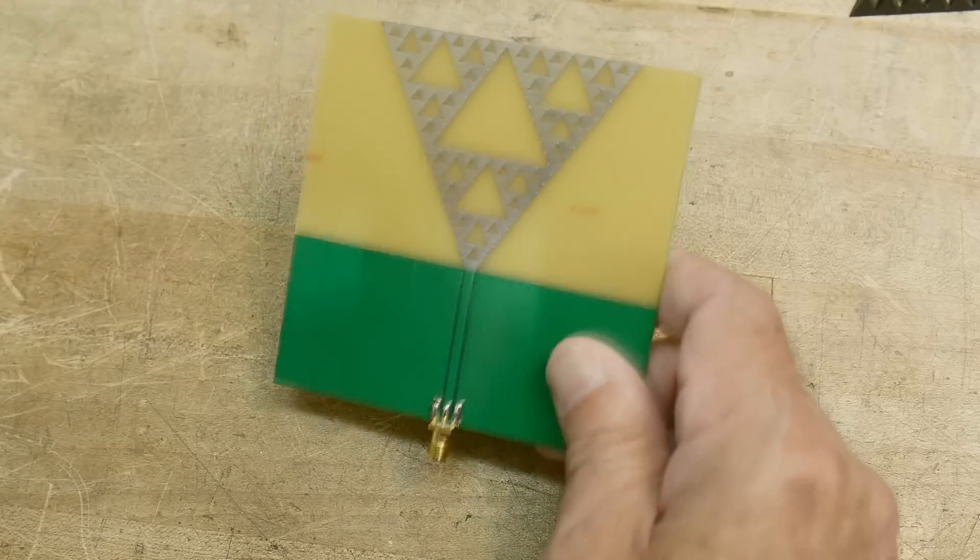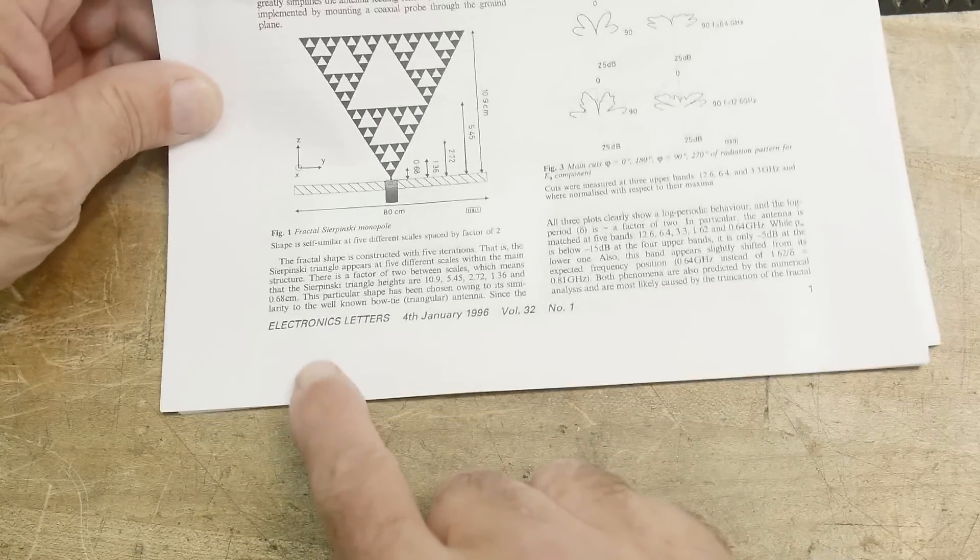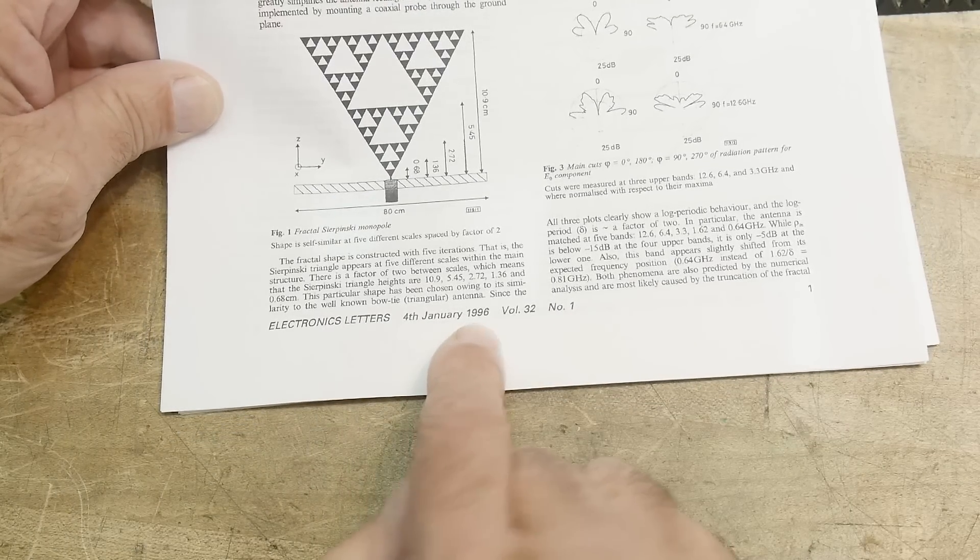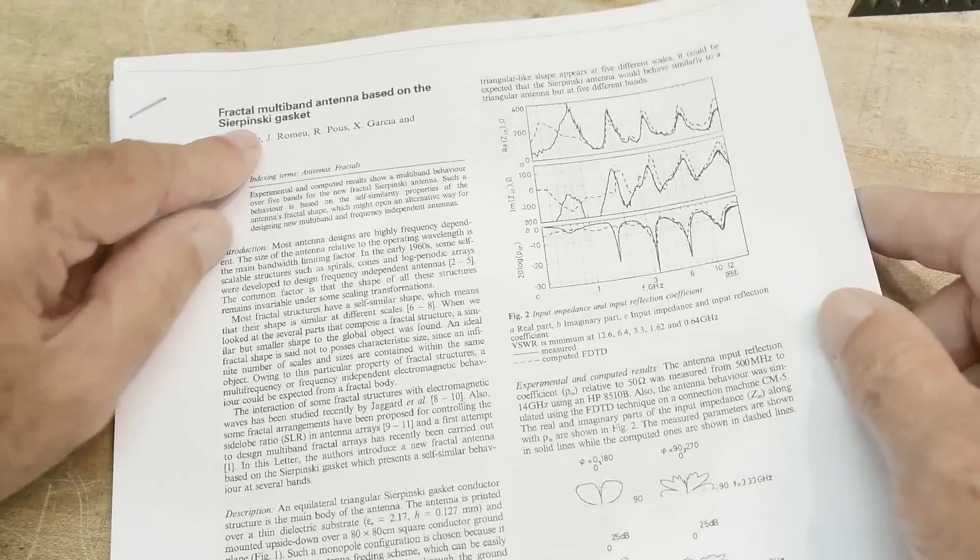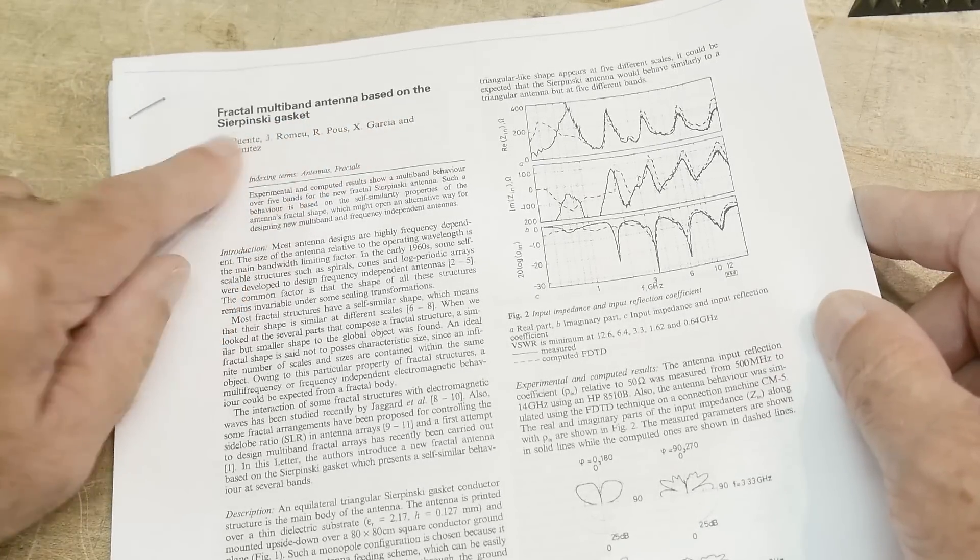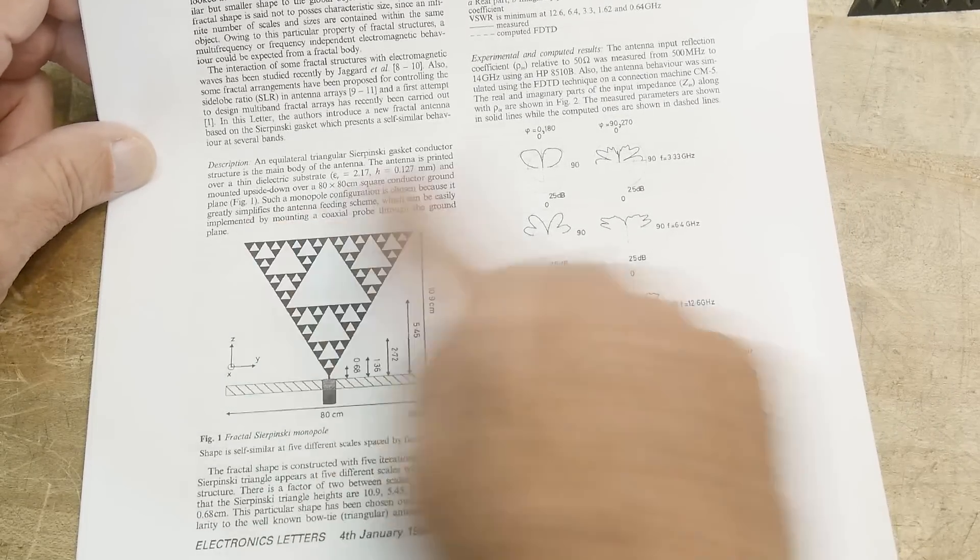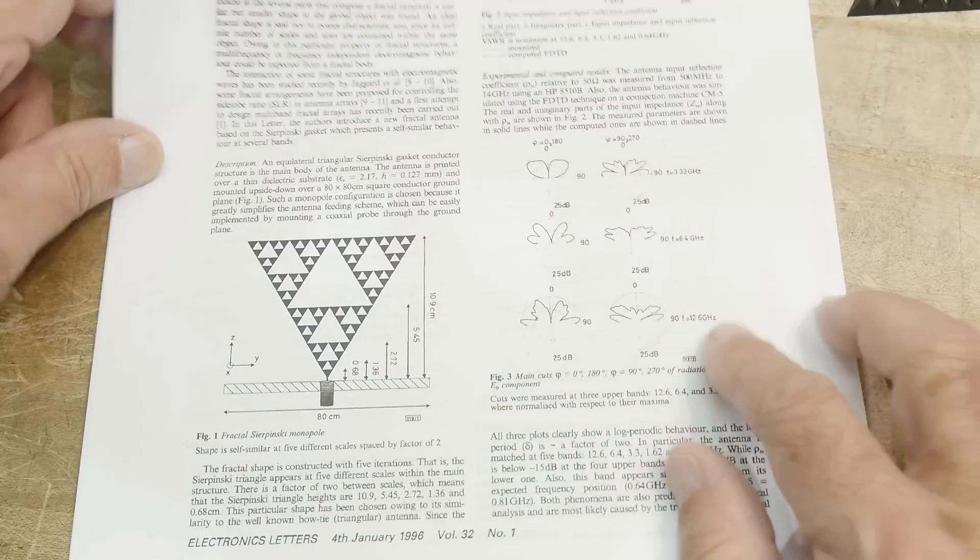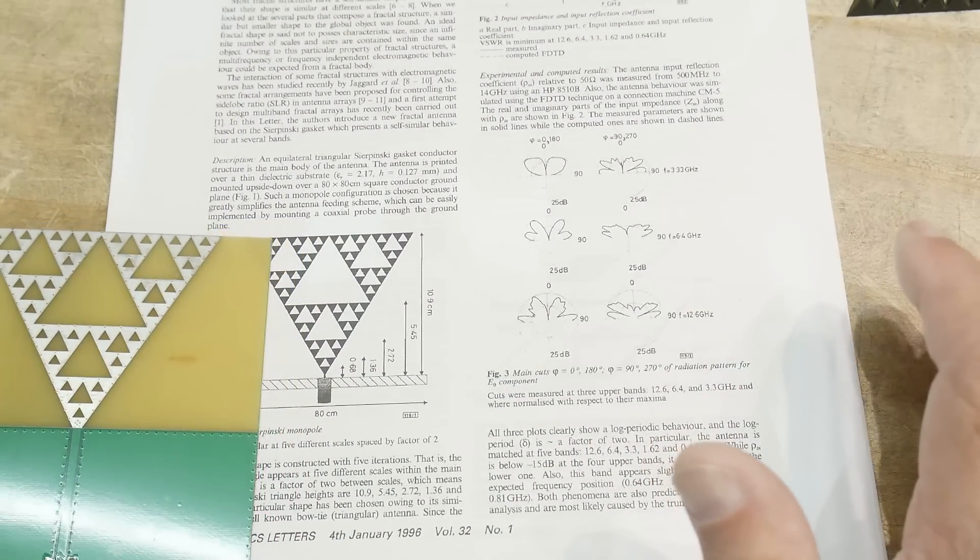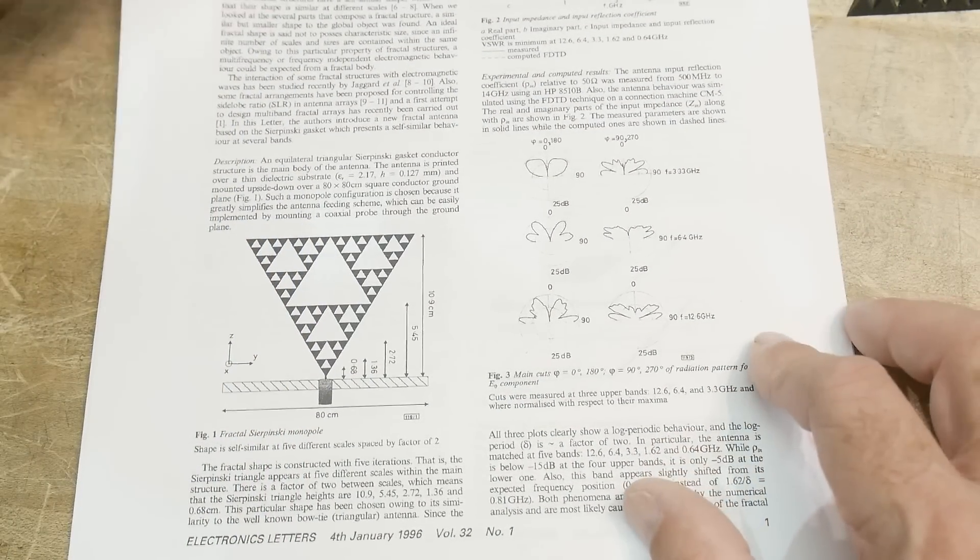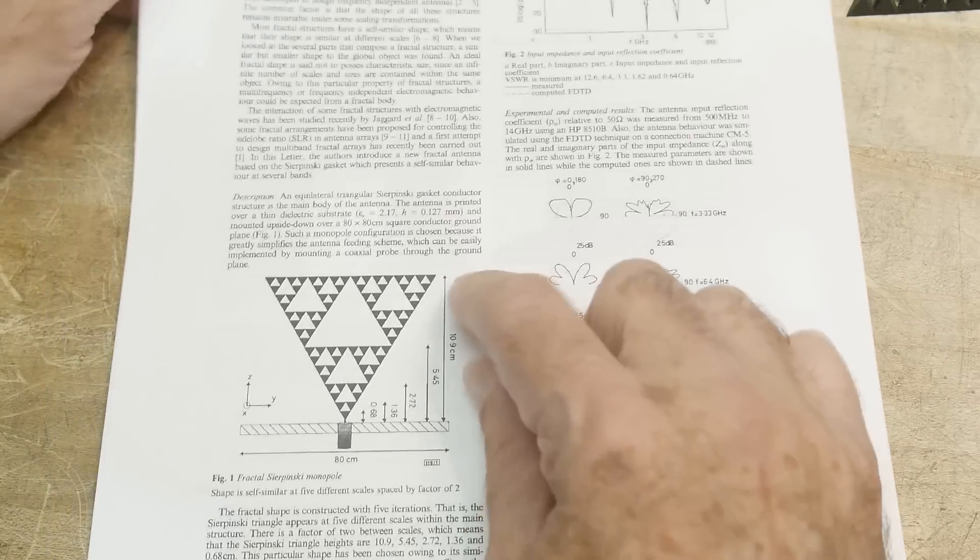All right, so before we play with this, let's look at some things you can find online. Here is something from Electronic Letters in 1996 talking about fractal multi-band antenna based on the Sierpinski gasket. There you go, and here's the Sierpinski gasket just like ours.